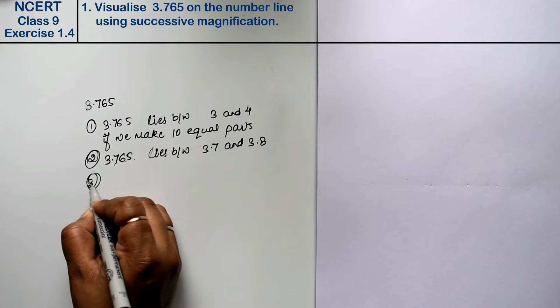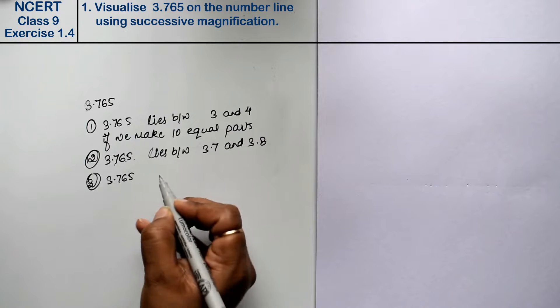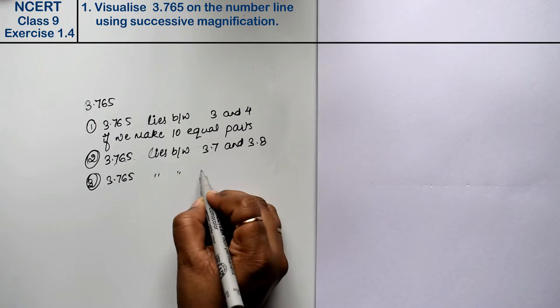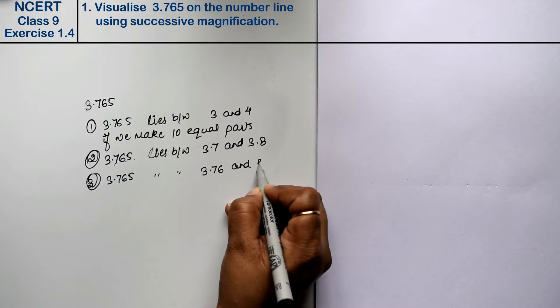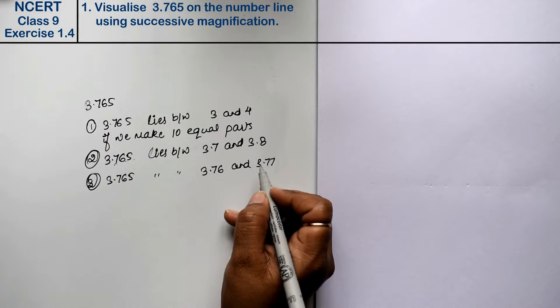If we look at the third part, 3.765 lies between 3.7 and 3.77. Let's see how.